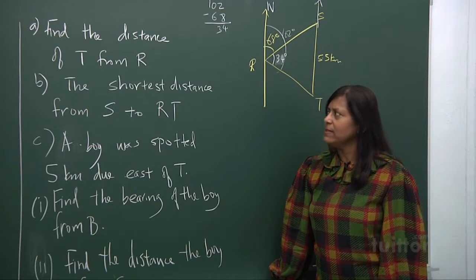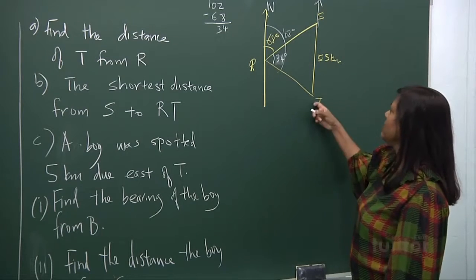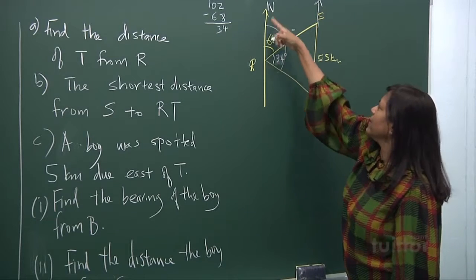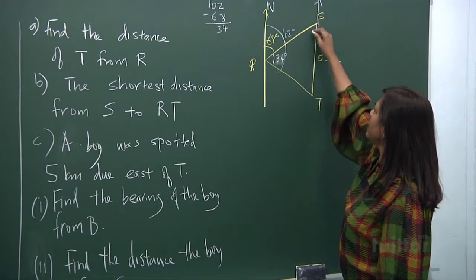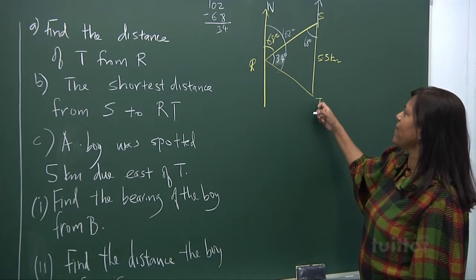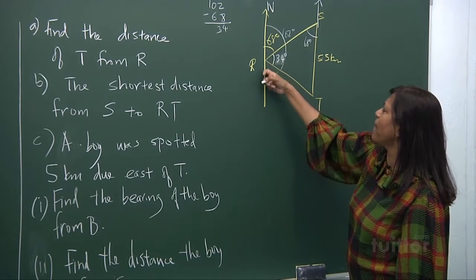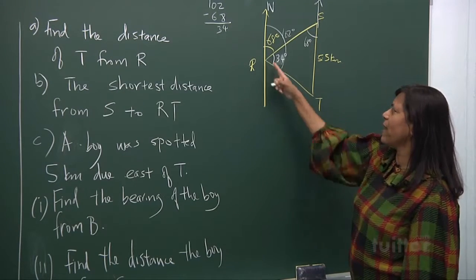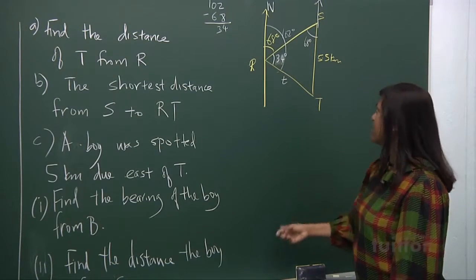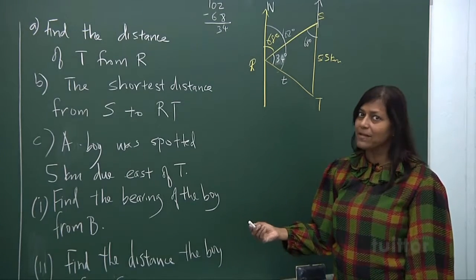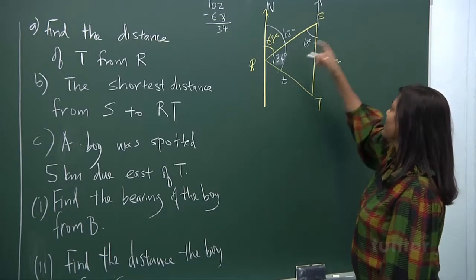Now find the distance T from R. If you have 68 degrees here, you can see the alternate angles staring right at your face, 68 degrees, and they want to find the distance of T from R. Let me call this a small t. They want to find out RT. Very simple, you can use sine rule. Remember your sine rule? So let's do it, do one set.